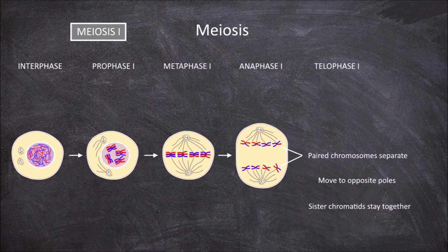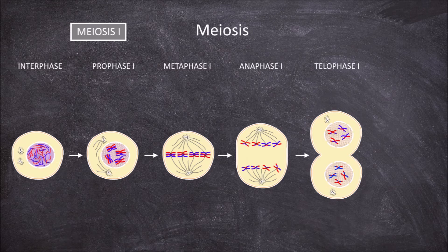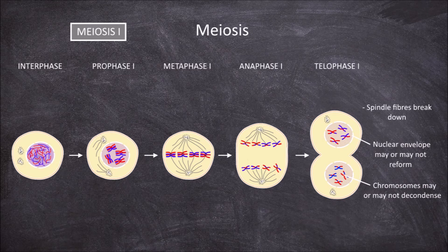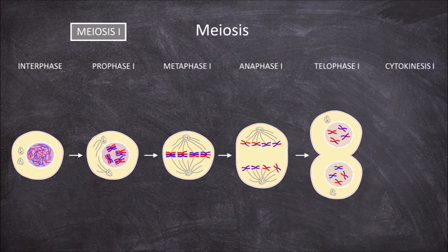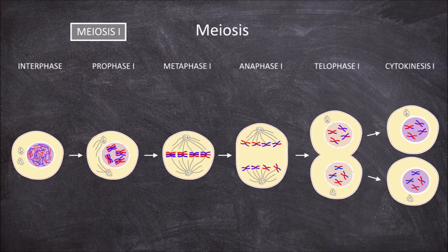The fourth phase of meiosis 1 is telophase 1. Now that the homologous chromosome pairs are separated onto the opposite poles of the cell, the spindle fibers break down. If the cell is undergoing rapid meiosis, the nuclear envelope does not reform and the chromosomes do not decondense before going into meiosis 2. In other cases, the nuclear envelope reforms around each set of chromosomes, re-separating the genetic material from the cytoplasm, and the chromosomes decondense. Cytokinesis also occurs at the same time as the end of telophase 1, where division of the cytoplasm creates two daughter cells, each containing one set of the separated homologous chromosomes.